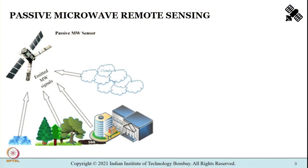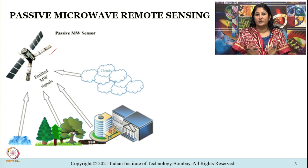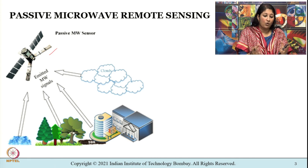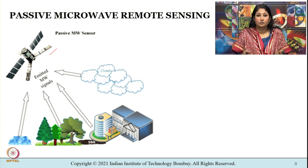Passive microwave remote sensing is very similar in concept to thermal remote sensing. The schematic shown here depicts naturally emitted electromagnetic energy in the microwave region being sensed by a sensor operating in that region. Conceptually, it is very similar to a camera without flash, as mentioned in one of the earlier lectures.